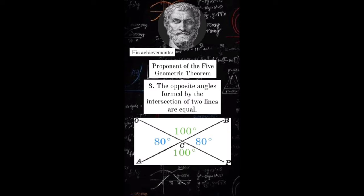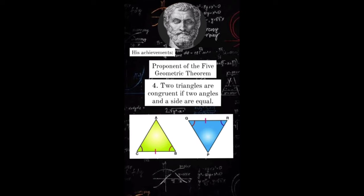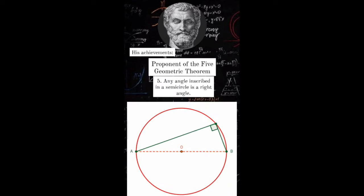3. The opposite angles formed by the intersection of two lines are equal. 4. Two triangles are congruent if two angles and a side are equal. 5. Any angle inscribed in a semicircle is a right angle.